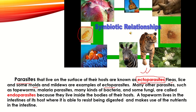Many other parasites, such as tapeworms, malaria parasites, many kinds of bacteria, and some fungi, are called endoparasites, because they live inside the body of their host. For example, malaria survives inside the human body. Some bacteria also live inside our stomachs and help our digestion. A tapeworm lives in the intestines of its host, where it resists being digested and makes use of the nutrients in the intestine.